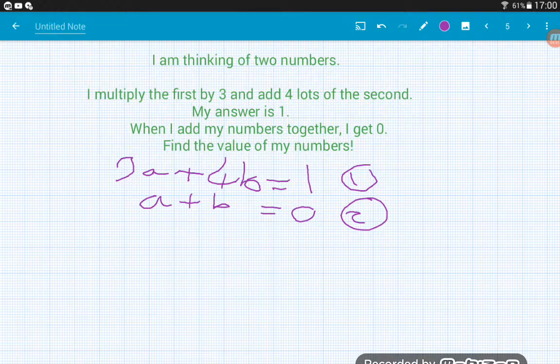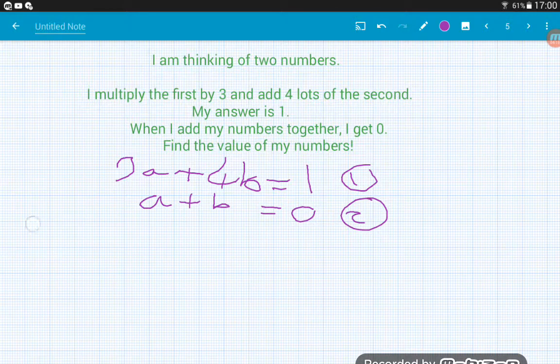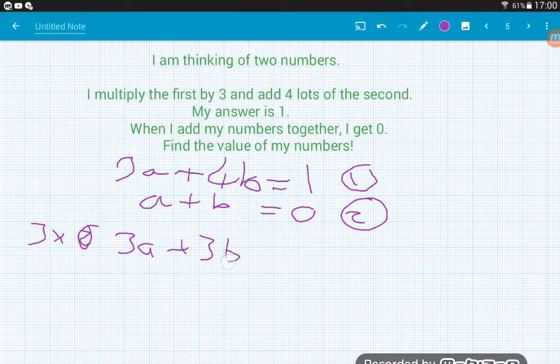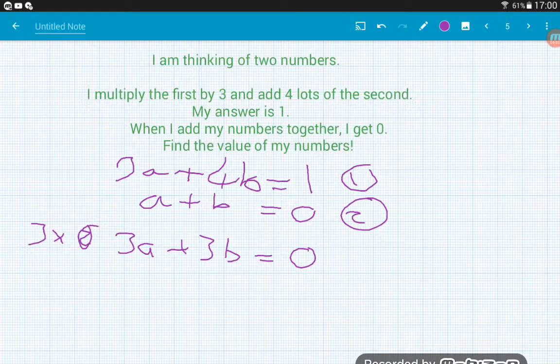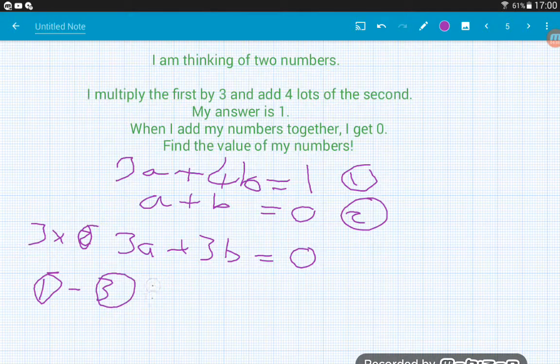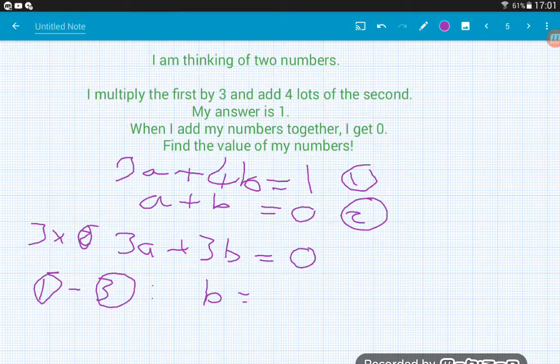Now we've got a choice here. Either we can alter equation two to get the same amount of A's or B's. Both are as easy as the other. I would always, as a habit, go for the smallest multiple. So I would go for the 3A. So we're going to multiply equation two by three and that's going to give us 3A add 3B is equal to zero. Three times zero is definitely zero. And then we're going to want to do the subtraction to cancel out the A's. So then we're going to do equation one take away equation three. We could do three take away one but then we'd be playing with negative numbers and we don't like to do that. So equation one take away equation three. 3A take away 3A cancels out. 4B take away 3B would leave us with 1B. And one take away zero is indeed one. So B equals one is our first part of our solution. My second number is one.